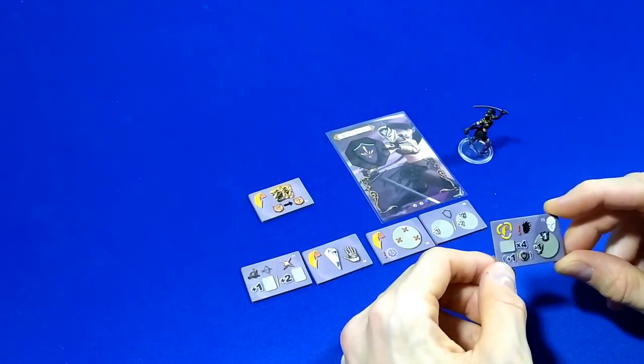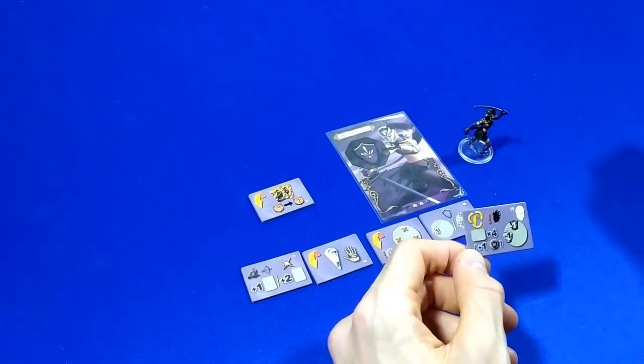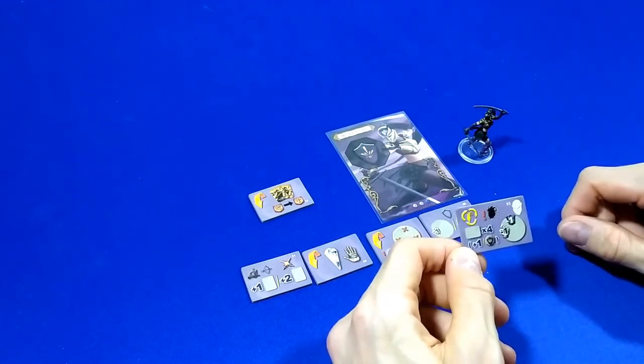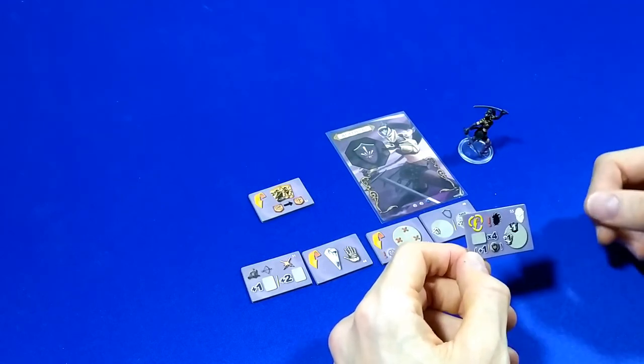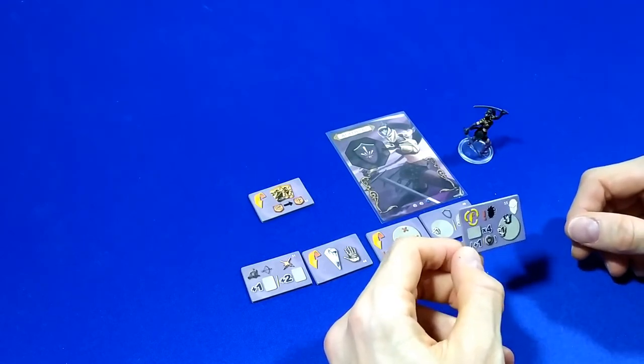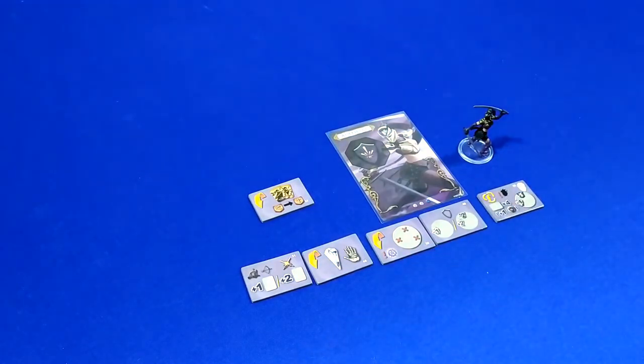So yeah it transforms what are often dead cards where you just play them sideways for one into something that can be extremely powerful, giving you at least plus four and sometimes more. So yeah that is Howl of the Pack. So those are the five that I chose for Wolfhawk.